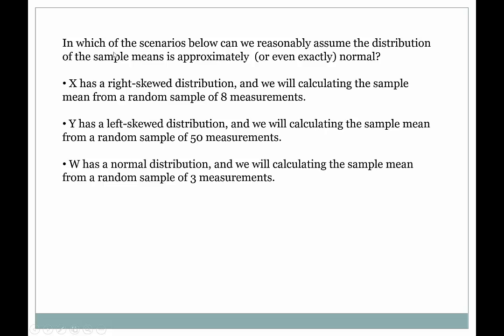Here's a quick example to test the concept. In which of these scenarios can we reasonably assume the distribution of sample means is approximately or even exactly normal? Scenario one: x has a right-skewed distribution and we're calculating the sample mean from a random sample of 8 measurements. Since it's a skewed distribution, we need a decent sample size to assume normality, and here the sample size is only 8. So no — we can't reasonably assume normality. We saw that at n=10 a left-skewed distribution still didn't look normal, so 8 is probably not enough.